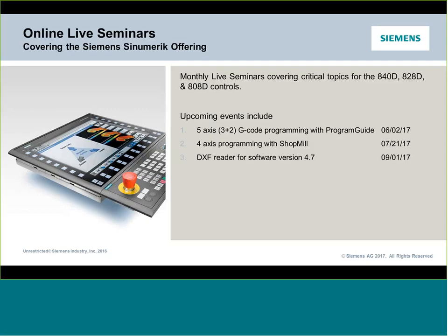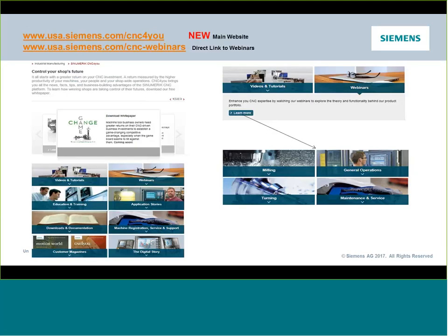Just to give you a teaser of upcoming content: the next webinar will go back to five-axis, specifically deep G-code, looking at methodizing three-plus-two parts from the G-code side using the program guide. After that, we'll switch gears to four-axis milling on the ShopMill conversational side. In September, we'll do a webinar on our new DXF reader, which allows programming right at the control from DXF files. We'll show a little snippet of that at the end of today's session.